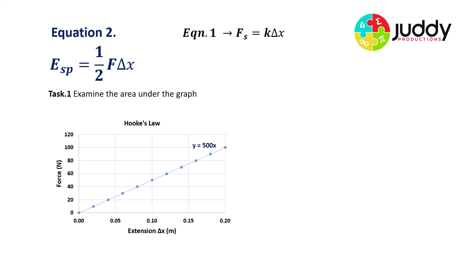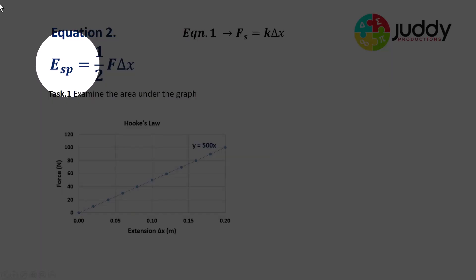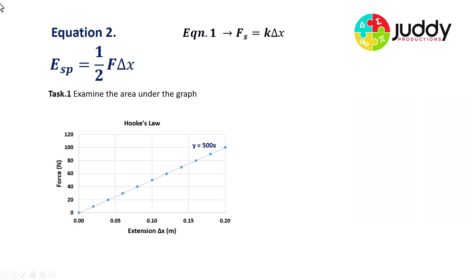Our second equation is E_sp, the strain potential energy, is equal to half F, the force, times delta X, the extension or compression depending on the circumstances. And we want to now look at how we derive that equation.